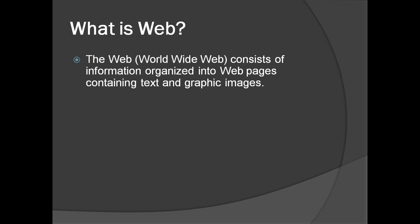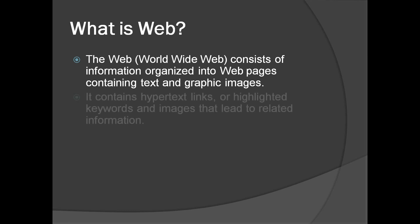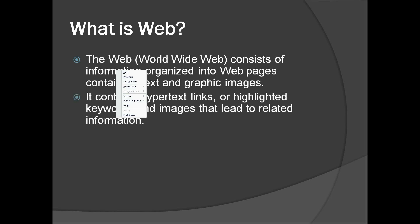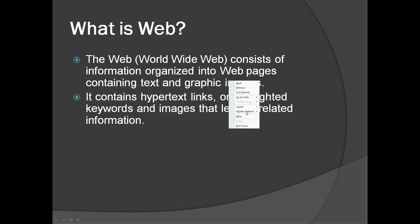What is the web? The World Wide Web consists of information organized into web pages containing text, graphics, and images. When we talk about the internet, we are referring to connectivity. When we talk about the web, it is the web pages which consist of text, graphics, and images.